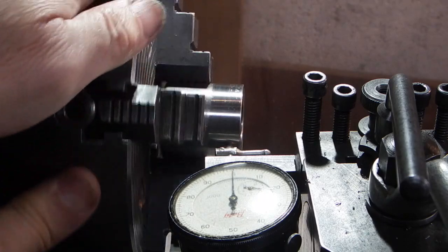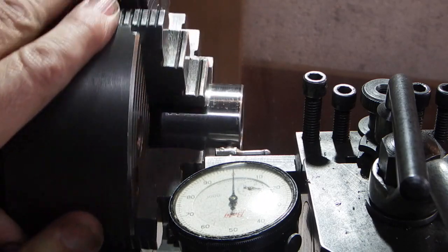Each division is one tenth of a thou. That's about three tenths.